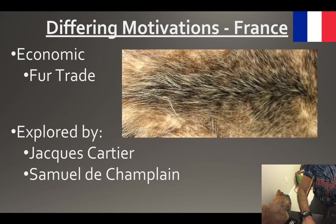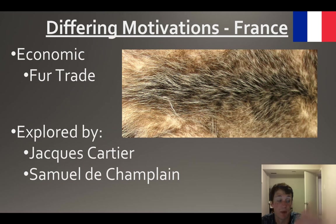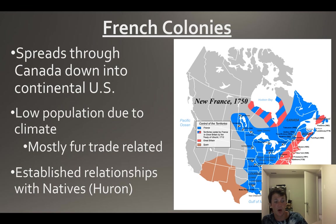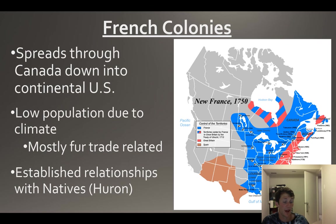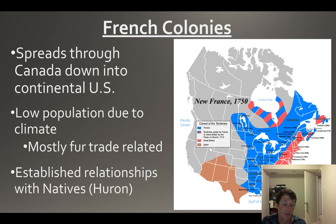He's going to be setting up colonies there, and you're going to have a very different colonial experience versus the Spanish. The French colonies spread down from Canada, essentially down the Ohio River Valley and into the Mississippi River Valley, eventually spreading down to New Orleans. This is going to be relatively low population due to the rough climate.